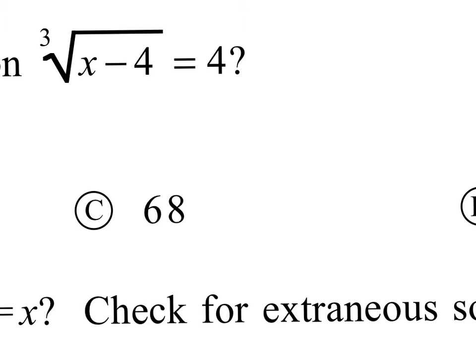Next up, we've got the equation, the cube root of the quantity x minus 4 is equal to 4. To get rid of that cube root, we've got to cube both sides. In doing that, we get x minus 4 is equal to 64. To finish solving this, add 4 to both sides, and x is equal to 68. Since this is multiple choice, you could also have plugged each of the answers in to see which one works.